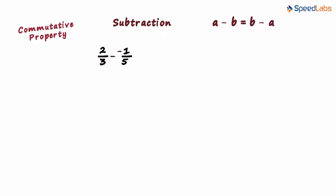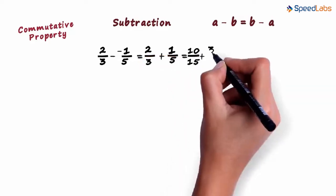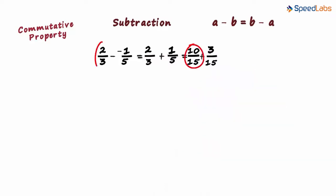The two negative signs cancel out and it can be written as 2 by 3 plus 1 by 5. Making the denominator same, we can write this as 10 by 15 plus 3 by 15. This is 2 by 3 and this is 1 by 5. Adding the numerators over the denominator, we get 13 by 15 as our answer.